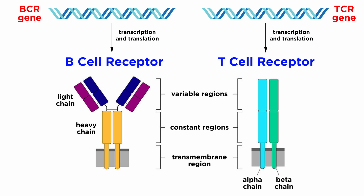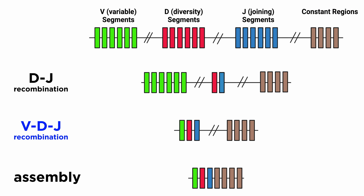To be able to generate such an astounding repertoire of receptors, BCR and TCR, or B and T cell receptor genes, are created by recombining pre-existing gene segments. VDJ recombination, or recombination of variable V, diversity D, and joining J gene segments, is an essential step in the development of the vertebrate immune system.